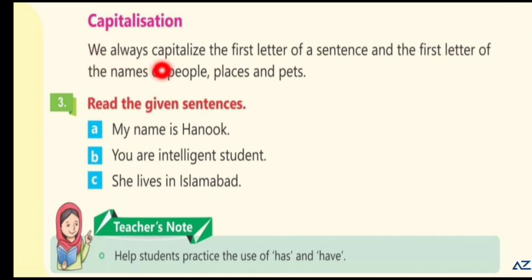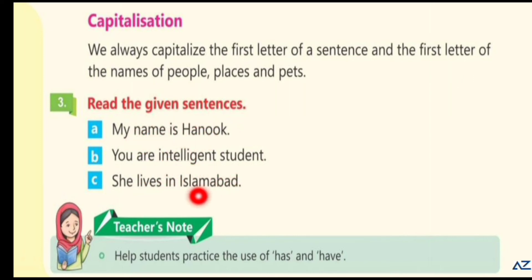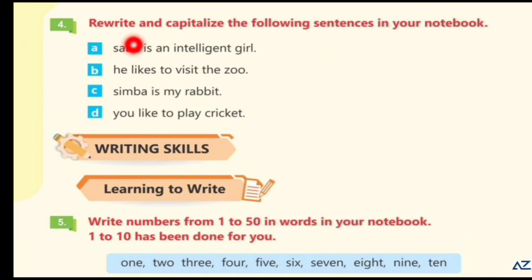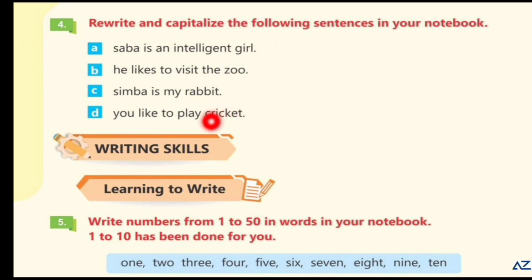Capitalization. We always capitalize the first letter of a sentence and the first letter of the name of people, places and pets. Read the given sentences: My name is Hanuk. You are an intelligent student. She lives in Islamabad. Rewrite and capitalize the following sentences in your notebook: Sabah is an intelligent girl. He likes to visit the zoo. Simba is my rabbit. You like to play cricket. Now kids, capitalize the first letter of Sabah, He, Simba and You.